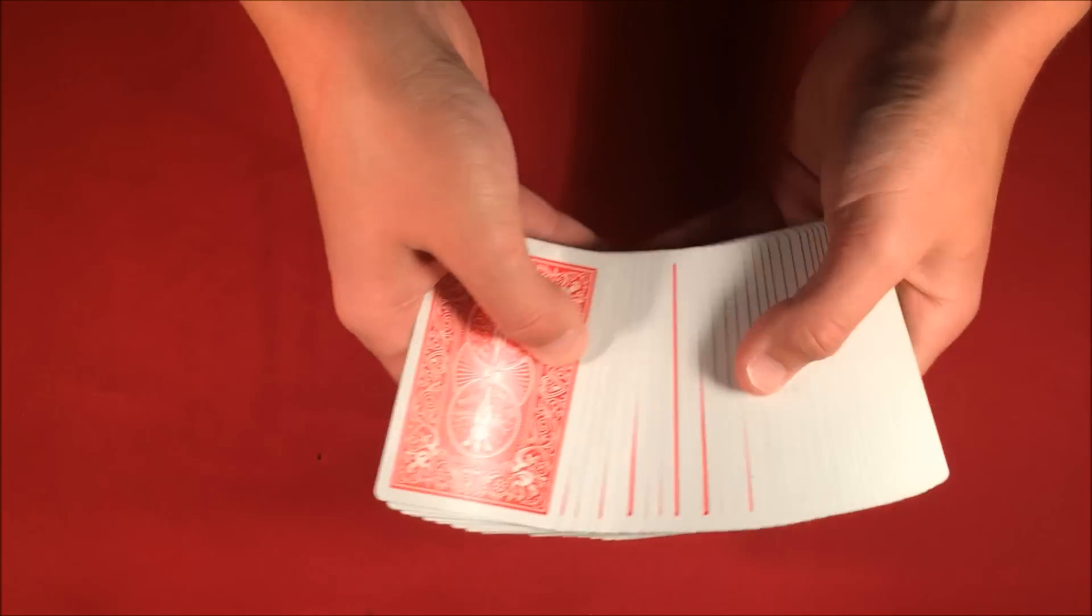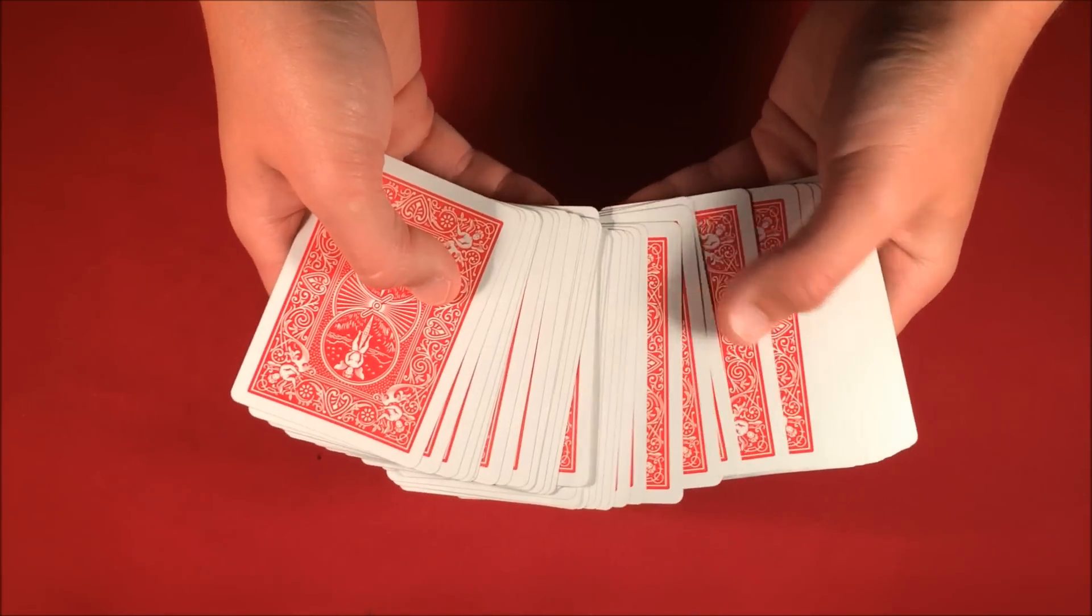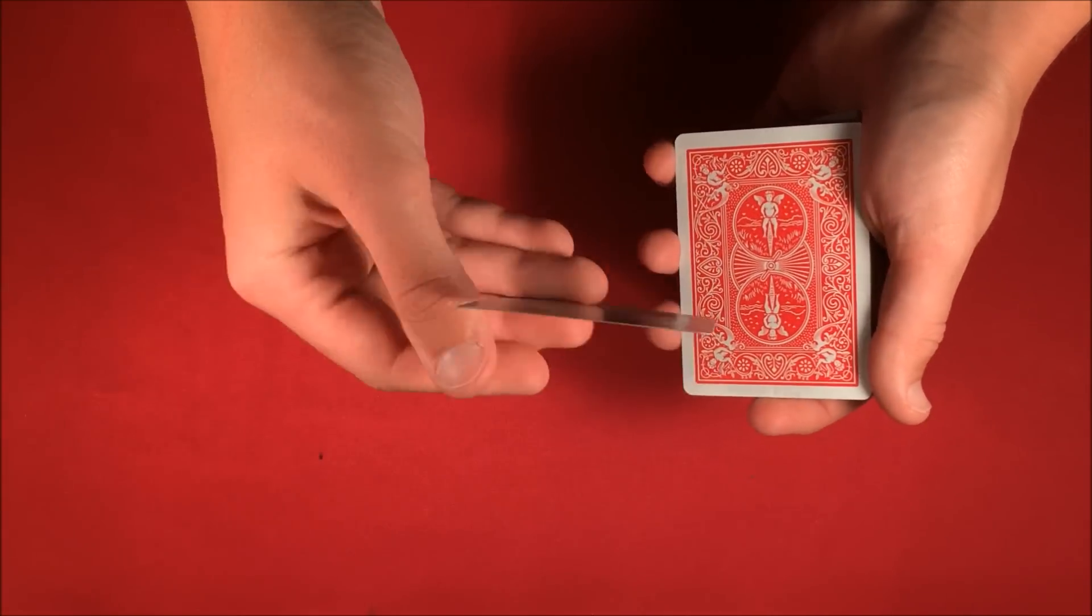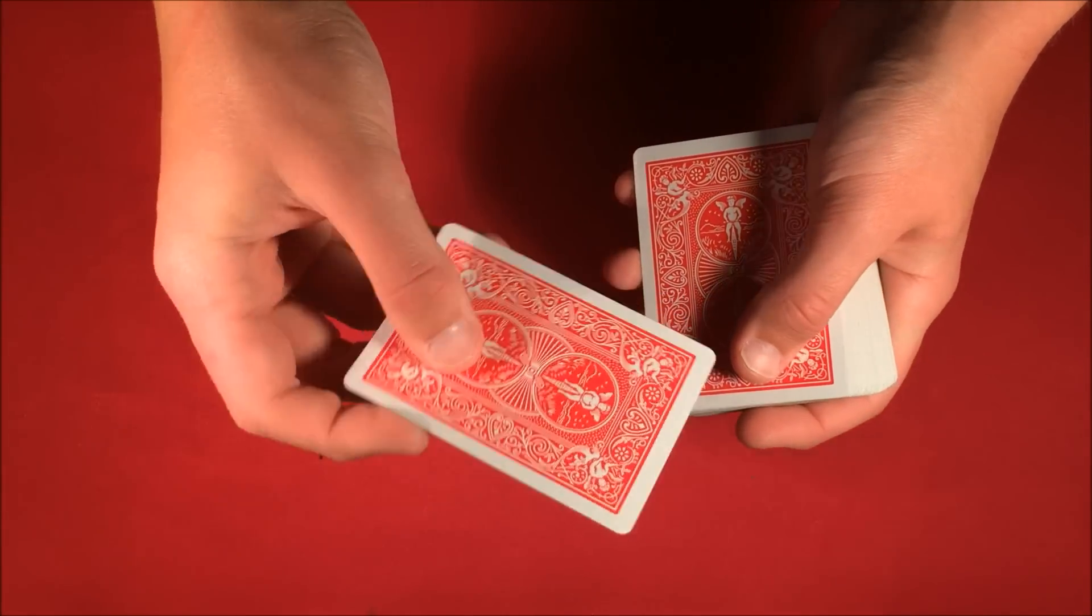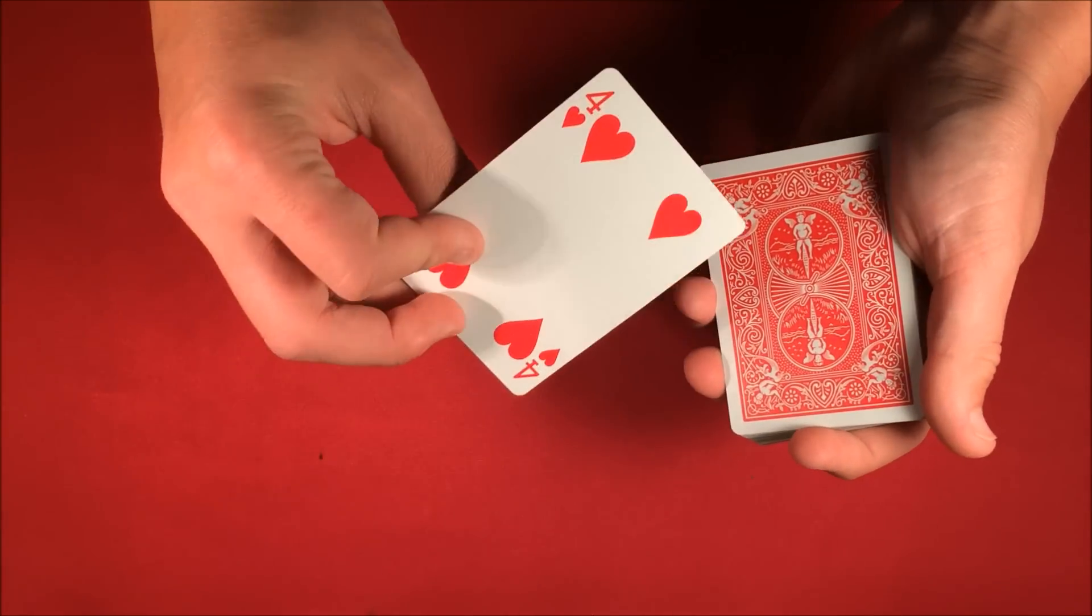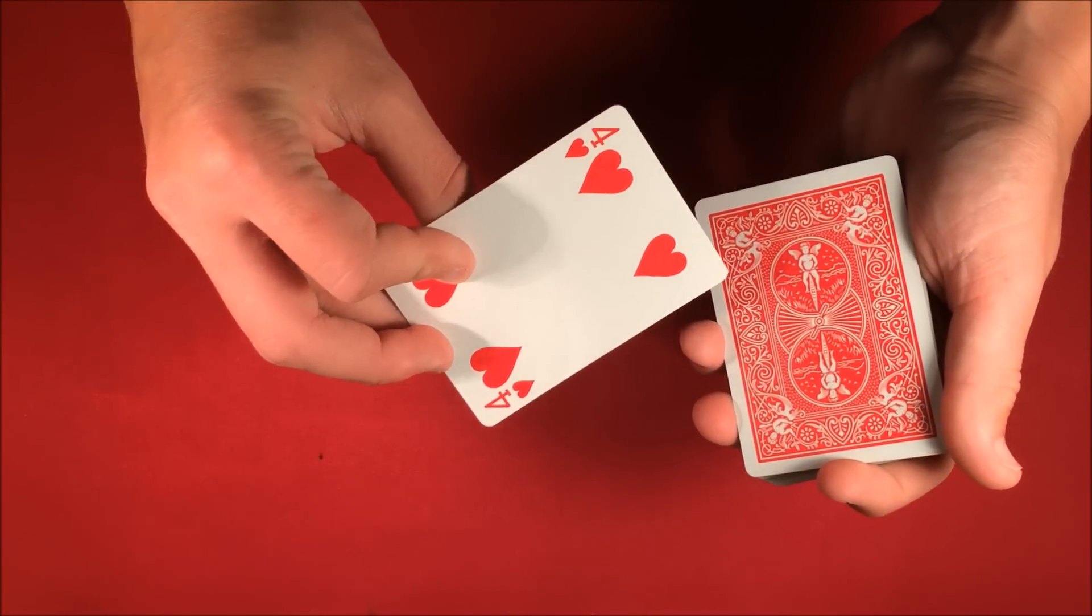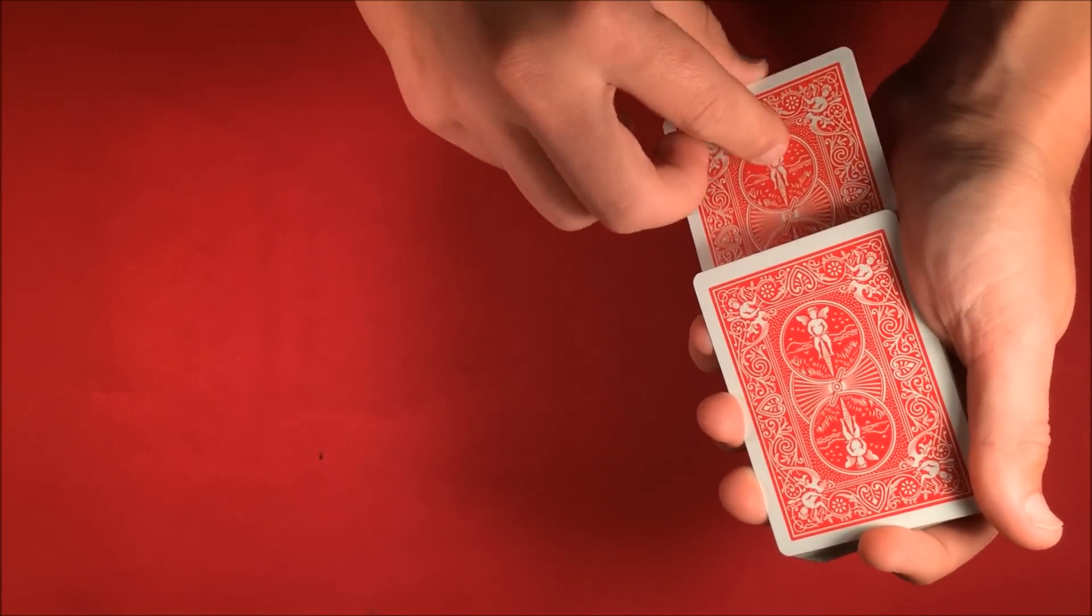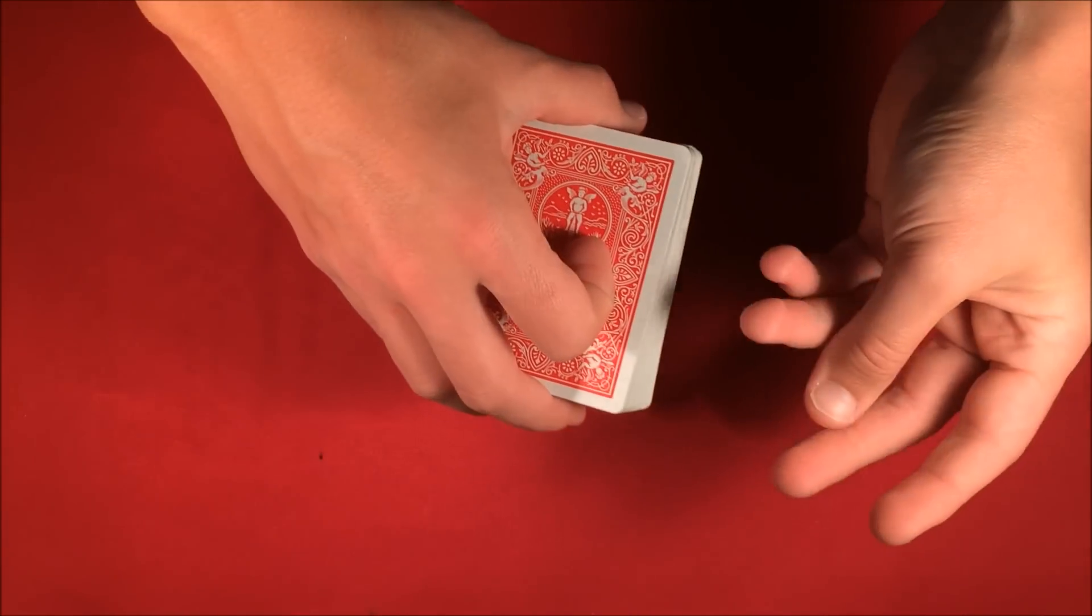So let's say the spectator mixes up the deck and they can really pick any card that they want. Let's say they pick this one, it doesn't matter which one. Let's say they pick the four of hearts. If you want you'd actually have them sign it, it isn't really necessary, but anyways let's say they take the four and they put it into the middle of the deck like this.